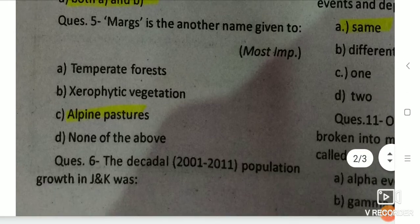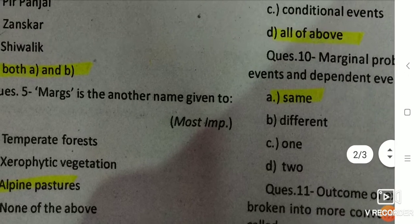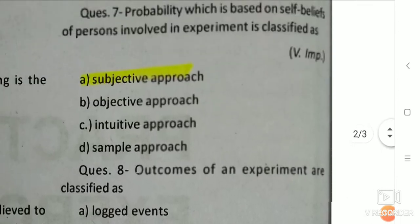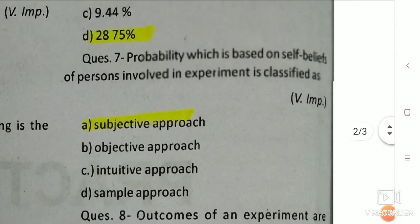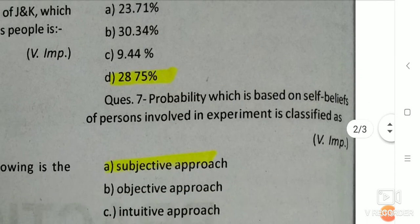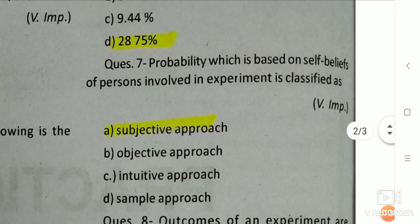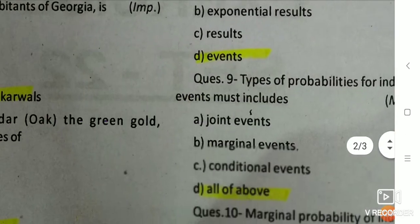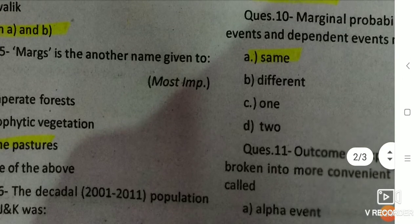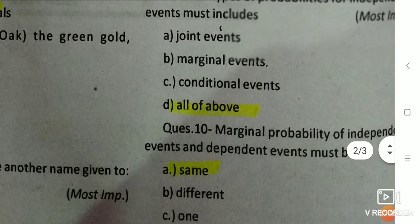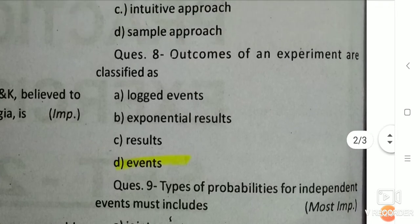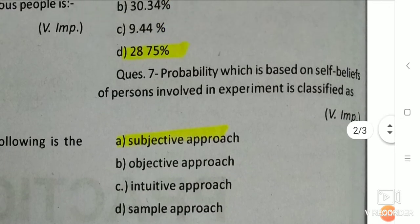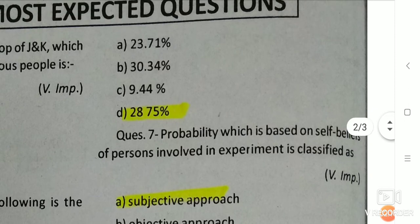Q5: The decadal growth of population in J&K from 2001 to 2011 — how much was it? The decadal growth means the growth over 10 years, from 2001 to 2011. The right answer is 28.7 percent.